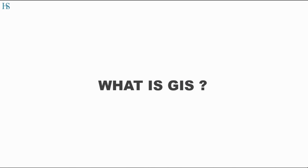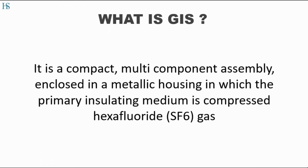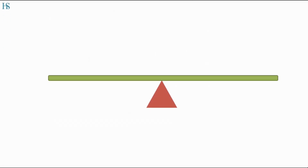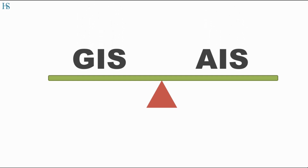So what is GIS? It is a compact multi-component assembly enclosed in a metallic housing in which the primary insulating medium is compressed sulfur hexafluoride, i.e. SF6 gas. This SF6 gas acts as an insulator between the live parts and the earth metal enclosure. GIS contains the same compartments and components that we see in a normal AIS, i.e. air insulated substation, but the only difference is in the insulating medium.